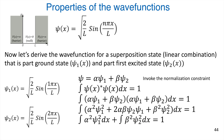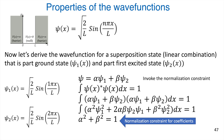Moving alpha-squared and beta-squared outside the remaining integrals, we can invoke the normalization constraint: psi-one times psi-one integrated over all space gives one, and the same for psi-two. So we're left with alpha-squared plus beta-squared equals one. That is the normalization constraint on our coefficients — the sum of the squared coefficients must add up to one, no matter how many terms you have.